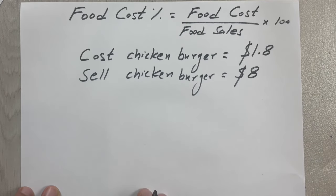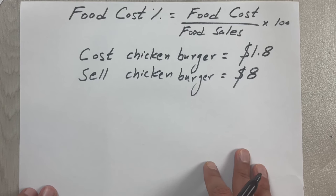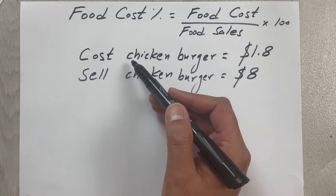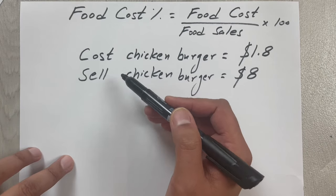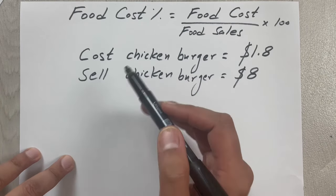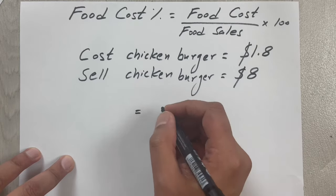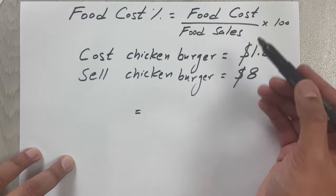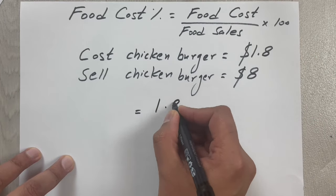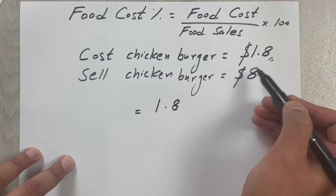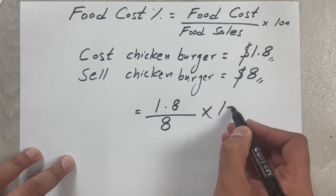The cost is $1.80 and the selling price is $8. This cost includes everything—labor, ingredients, bills, everything. The cost of the chicken burger is $1.80, so now we will put the values in this formula: 1.8 divided by 8, multiplied by 100.